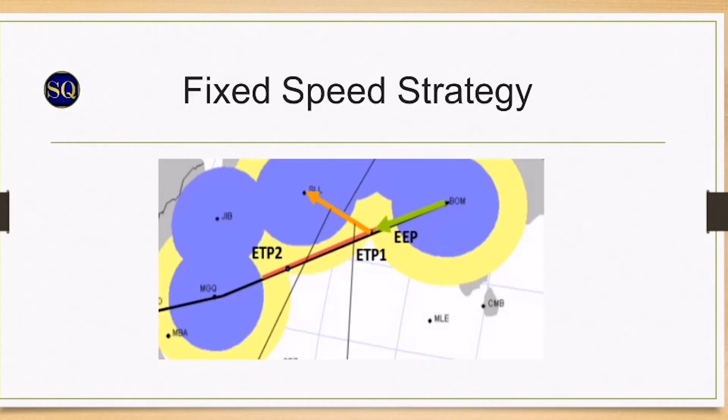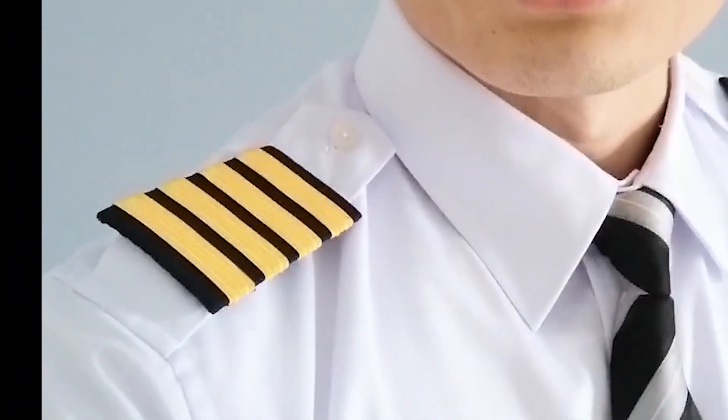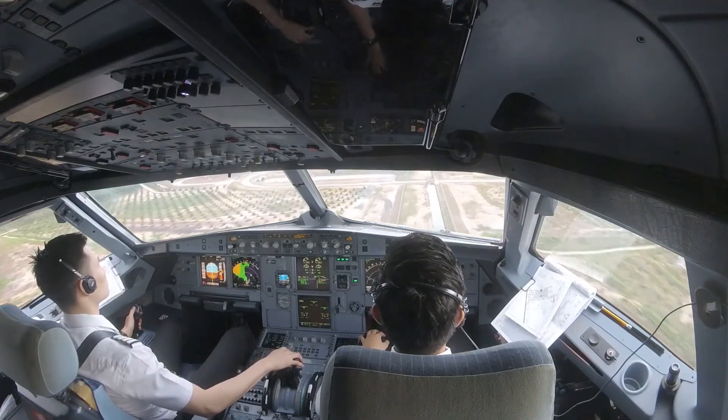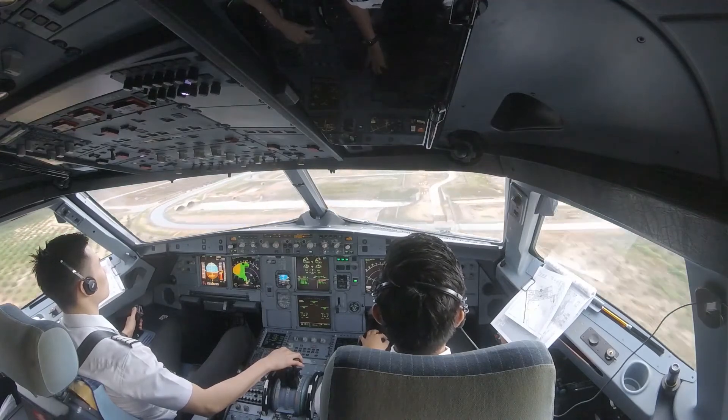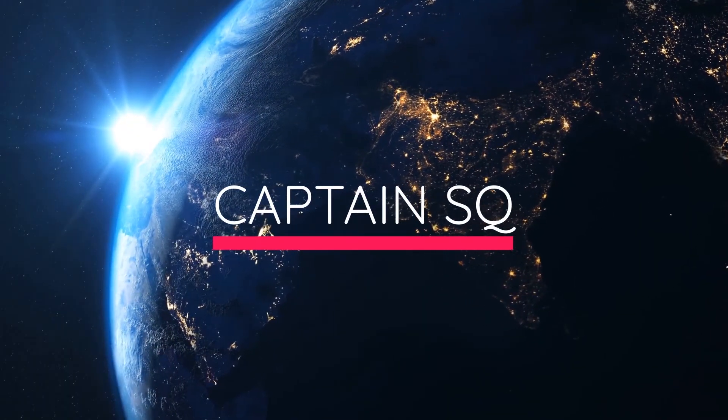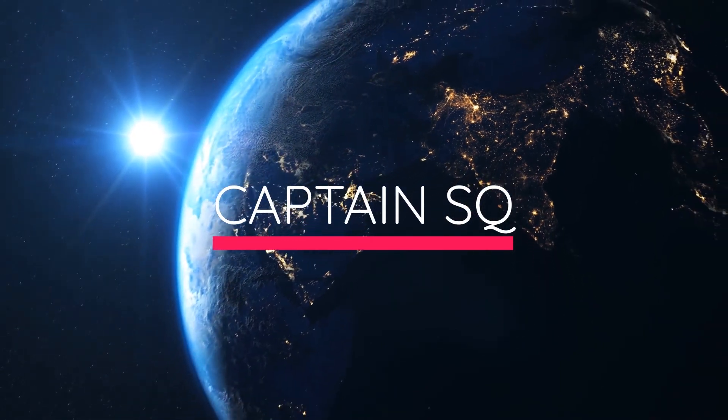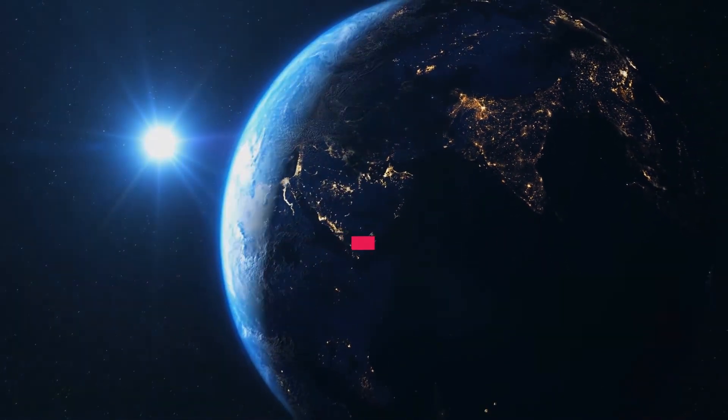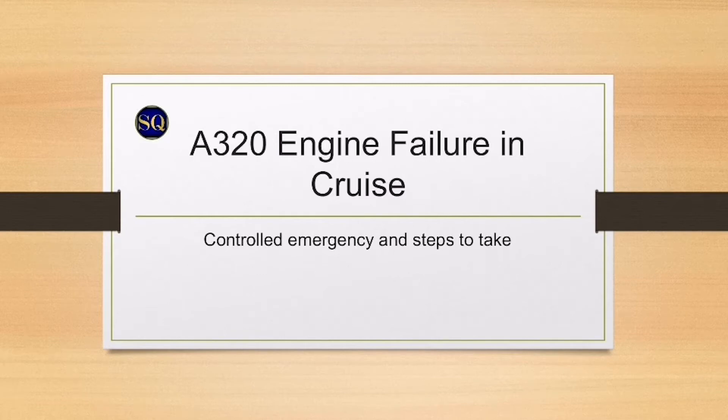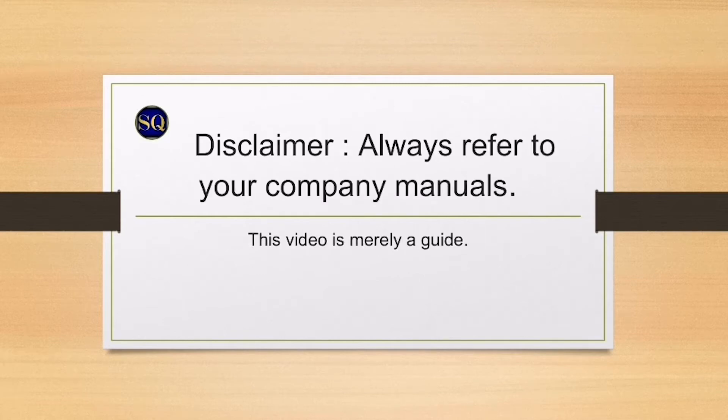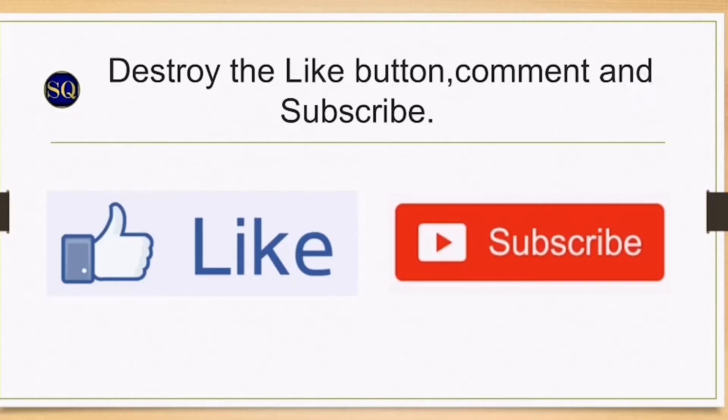And we all know that ETOPS stands for engines turning or passengers swimming. Ladies and gentlemen, welcome to my channel Captain SQ, where we're going to discuss Airbus systems, emergency procedures, and supplementary techniques on how to fly the plane. A320 engine failure in cruise control, emergency and steps to take. Disclaimer: always refer to your company manuals. This video is merely a guide. Before we start, destroy the like button, comment and subscribe if you want to see more of these videos.